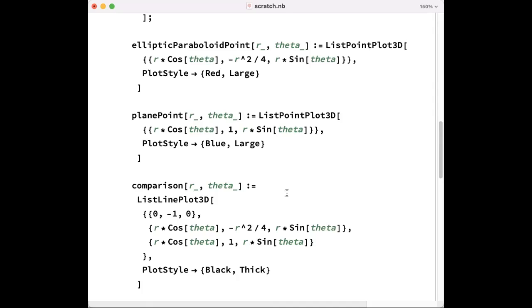Finally, for comparison, let's draw two lines with ListLinePlot. Let's draw a line from (0, -1, 0), which will be the focus of the paraboloid, to the point on the paraboloid at (R cosine theta, R sine theta, -R squared over 4), to the point on the plane at (R cosine theta, R sine theta, 1). Let's make this line from one point to the next point to the next point, black and thick.